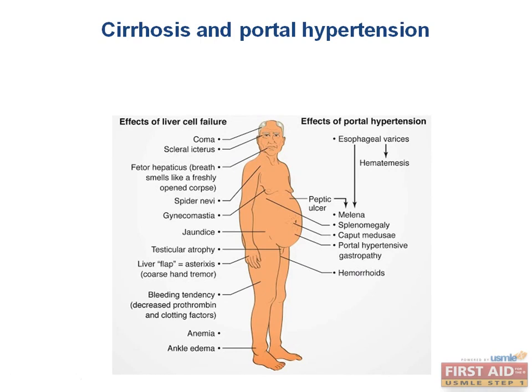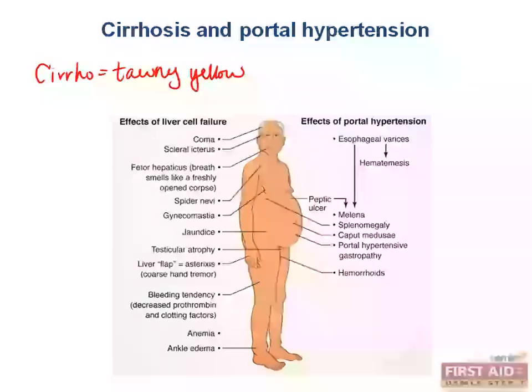Portal hypertension is a more broad category of which cirrhosis is one possible cause. Ciro is the Greek term for tawny yellow, which describes the color of jaundice. Cirrhosis is the technical term for diffuse fibrosis of the liver, where the normal architecture has been destroyed.